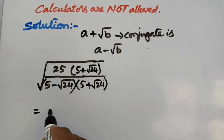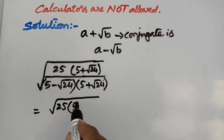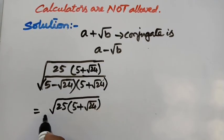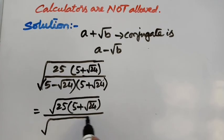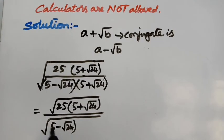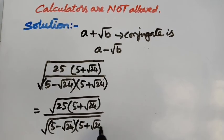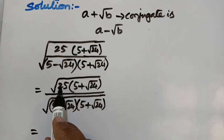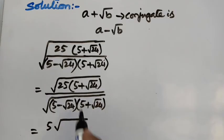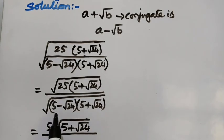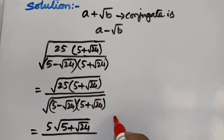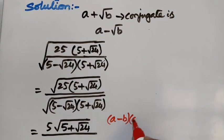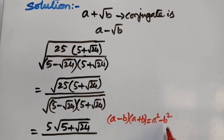So here, multiplying numerator and denominator by 5 plus root 24 divided by 5 plus root 24. Separating the square root for numerator: root 25 into 5 plus root 24 divided by the denominator. Root 25 is 5, so the numerator becomes 5 into 5 plus root 24. We can use the algebraic identity A minus B into A plus B equals A squared minus B squared.